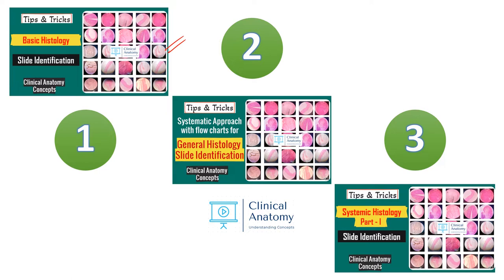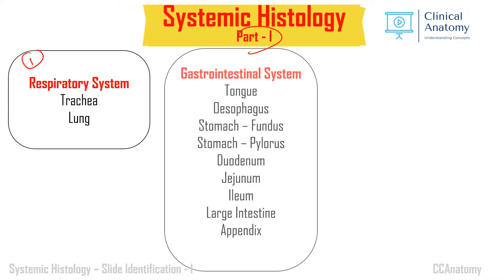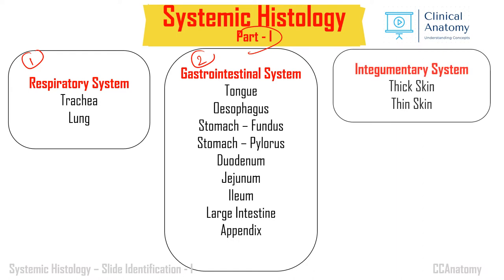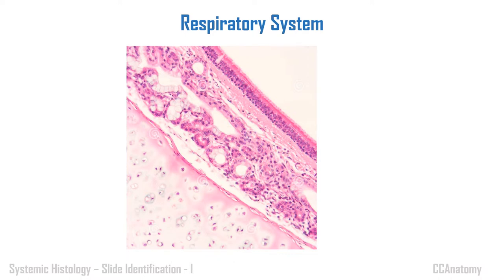The complete systemic histology is divided into two parts; this is the first part. I strongly recommend you go through the remaining two videos first, since in this video we are going to see what combinations of epithelium and connective tissue define each slide. Here we are going to cover the respiratory system, gastrointestinal system, integumentary system (thick and thin skin), renal system, and glands associated with the GI system.